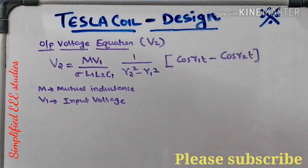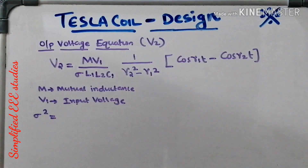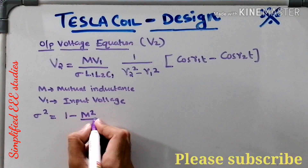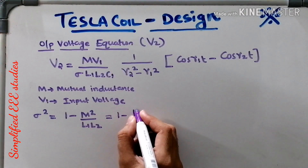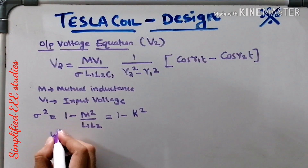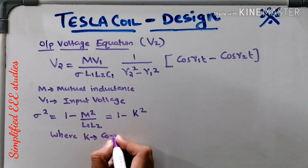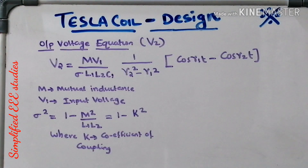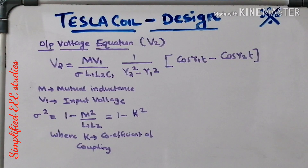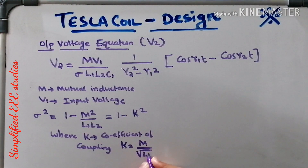Now let us understand what sigma is. Sigma squared equals 1 minus m squared divided by L1 times L2, which simplifies to 1 minus k squared, where k is known as the coefficient of coupling. The coefficient of coupling is nothing but the total primary flux that links to the secondary side. For the ideal case, the coefficient of coupling would be 100%, though in practice approximately 90% is used. The equation for k is M divided by the square root of L1 times L2.